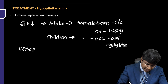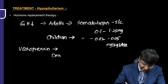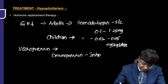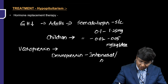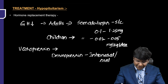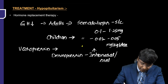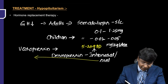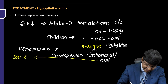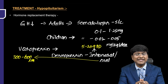If there is extension of hypopituitarism into the posterior pituitary, there is vasopressin deficiency, and you need to give a vasopressin analog — desmopressin. It can be given through the intranasal, oral, or subcutaneous routes. For the intranasal formulation, give 5 to 20 micrograms twice daily. For the oral route, the dosage is 300 to 600 micrograms. This concludes the treatment of hypopituitarism.